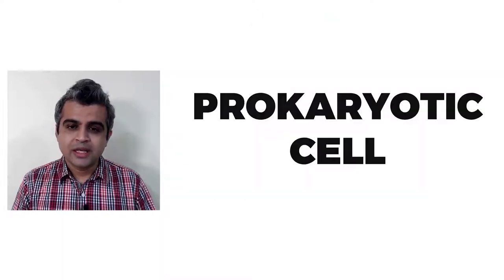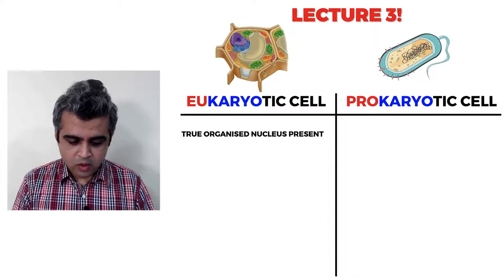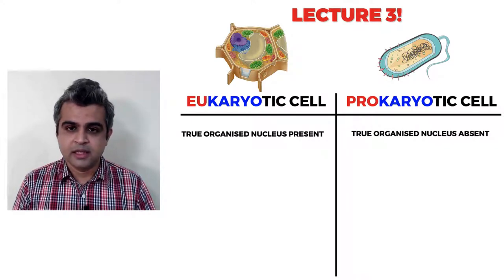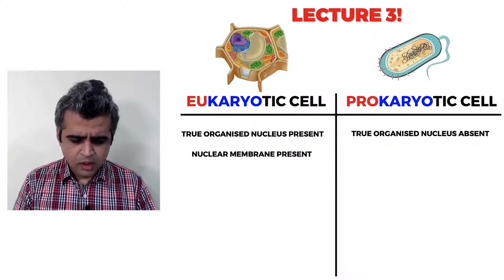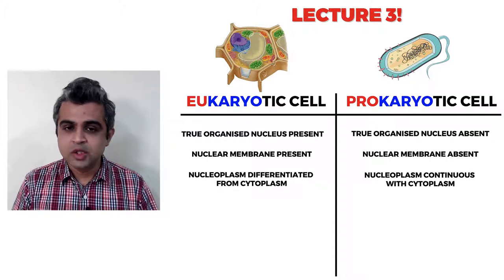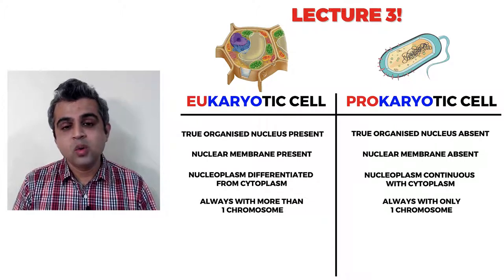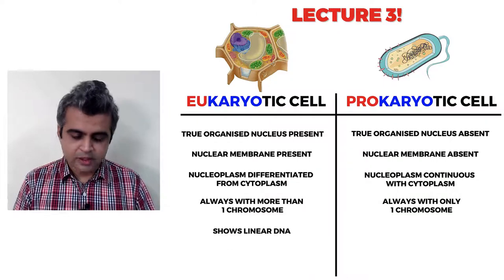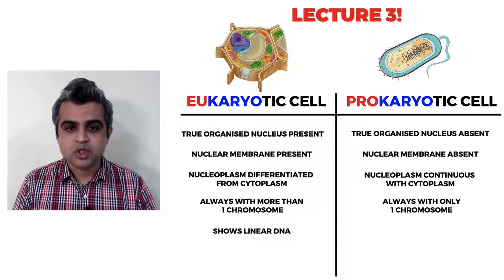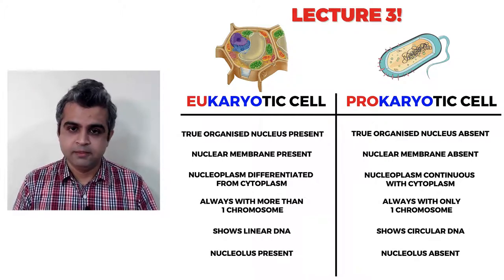In lecture 12 we first revised the difference between eukaryotic and prokaryotic cells from lecture 3: a true organized nucleus is present in eukaryotic cells but absent in prokaryotic cells. In prokaryotic cells there is no membrane surrounding the genetic material — that region is called the nucleoid. The nuclear membrane is present in eukaryotes but absent in prokaryotes. The nucleoplasm is differentiated from cytoplasm in eukaryotes but continuous in prokaryotes. Eukaryotic cells always have more than one chromosome, while prokaryotic cells have only one. Eukaryotes show linear DNA; prokaryotes show circular DNA. The nucleolus is present in eukaryotes and absent in prokaryotes.